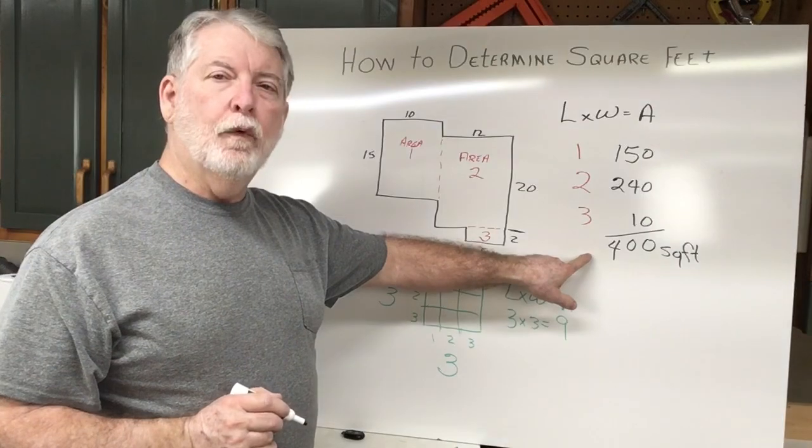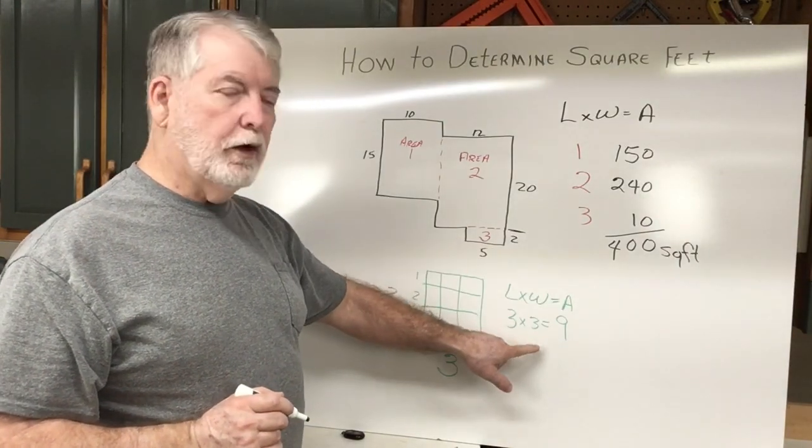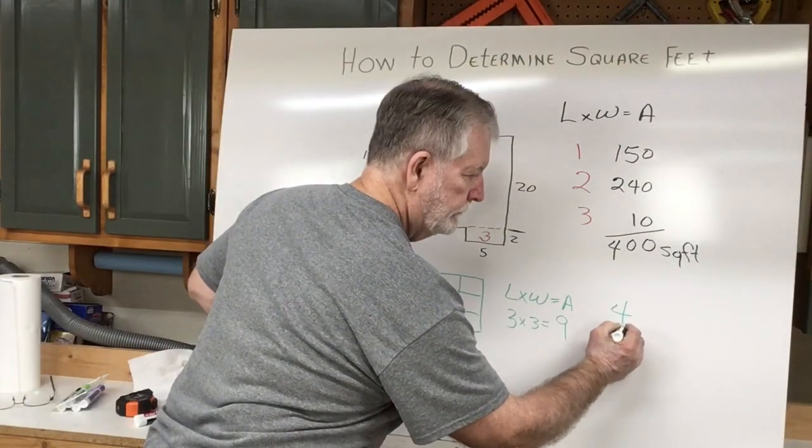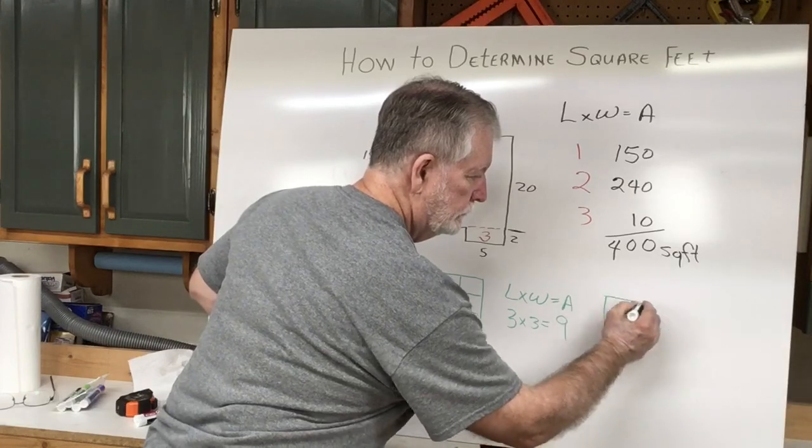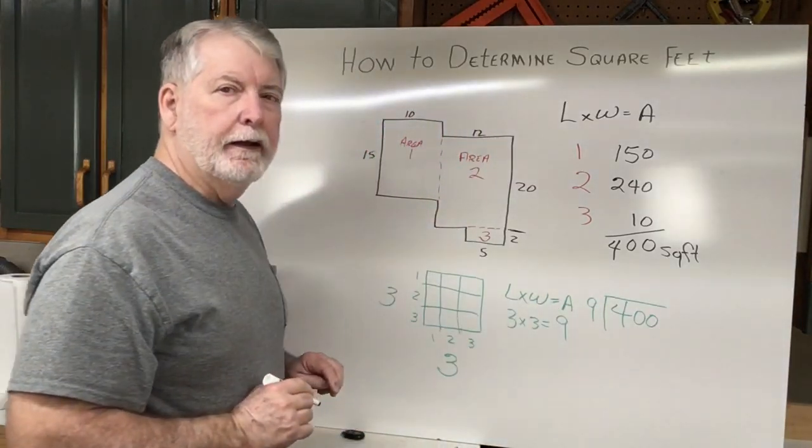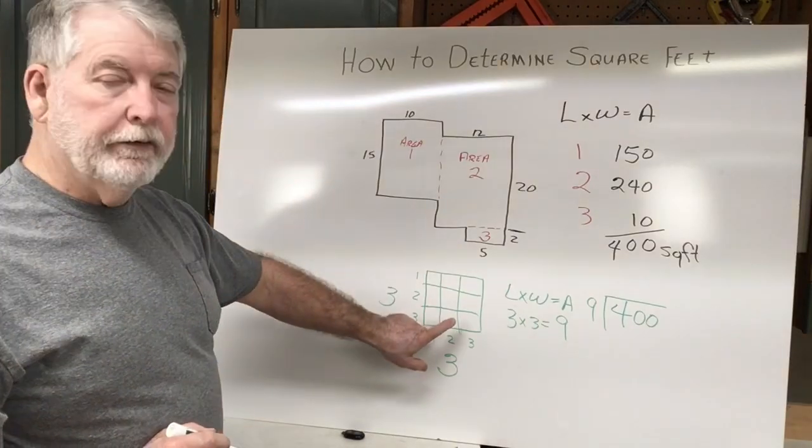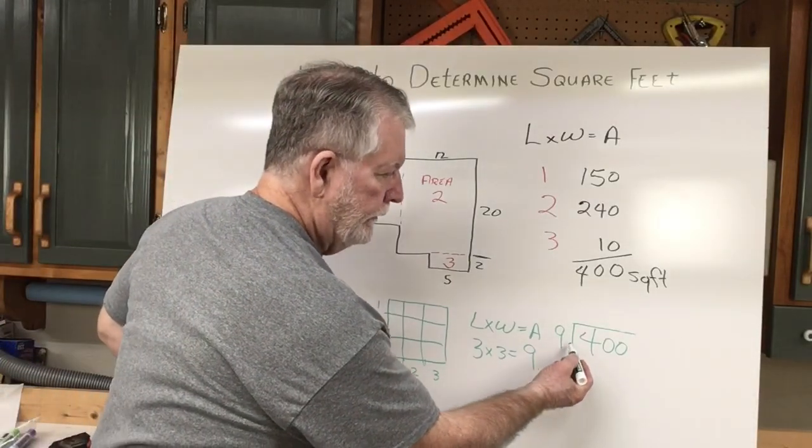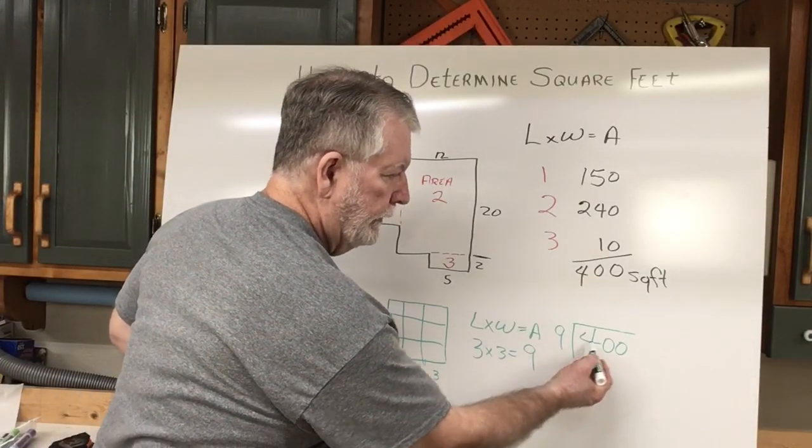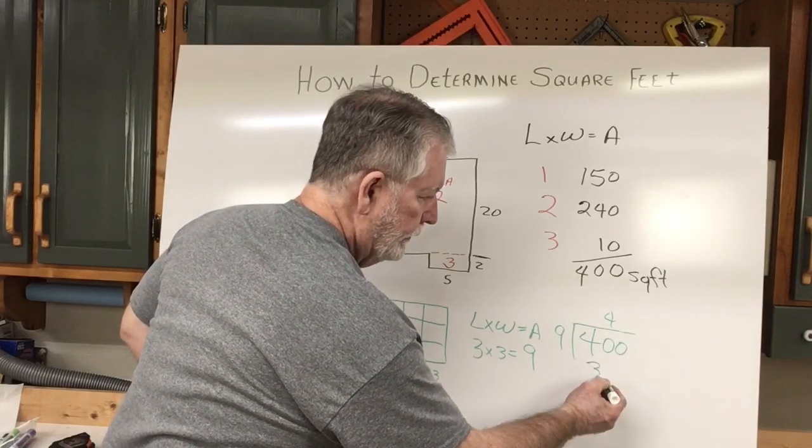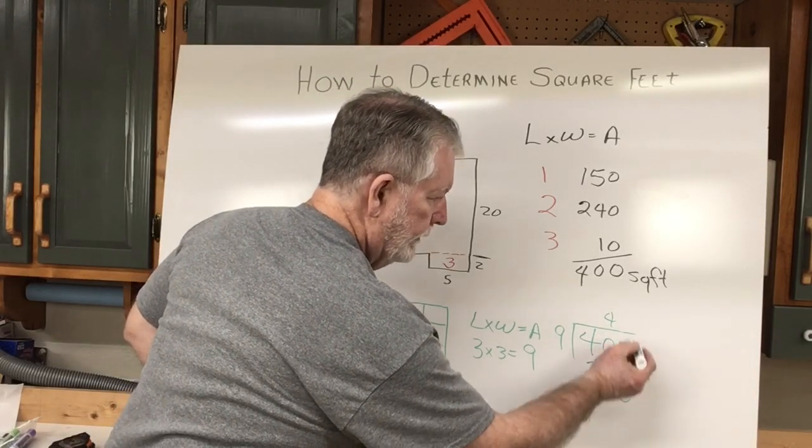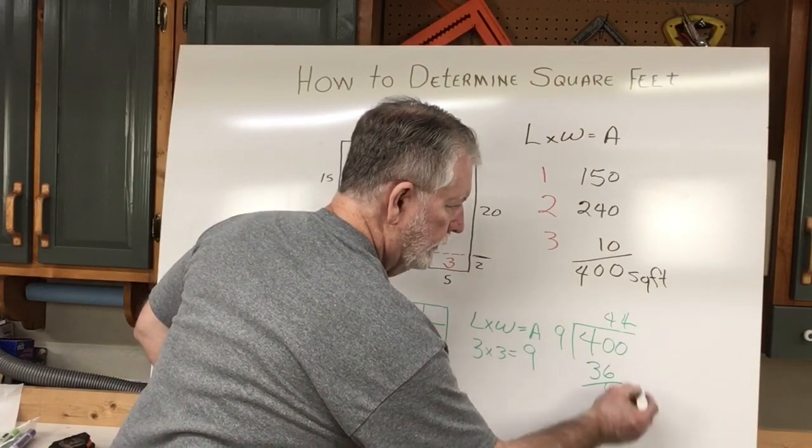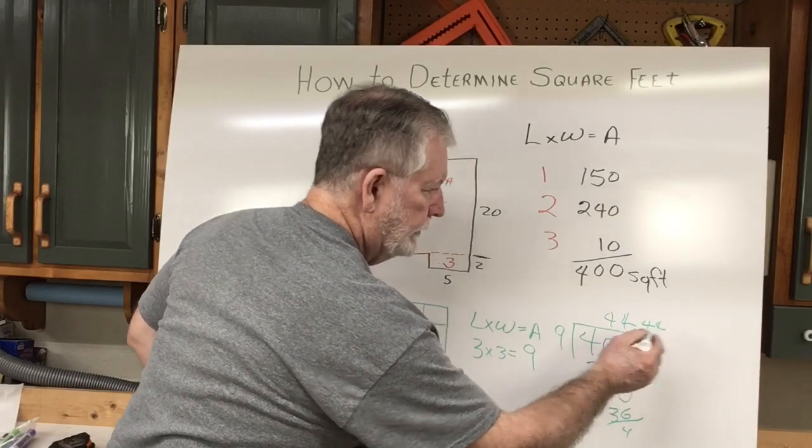So if you have 400 square feet, how many yards would that be? All you need to do is take the 400 and divide by nine. Because there's nine square feet in one yard. So nine divided by the 400. So that is going to be four. And there's 36. And that's four again. 36. And that will continue, and so on.